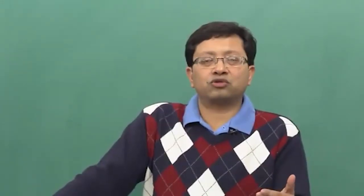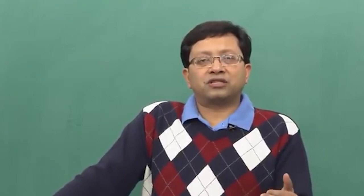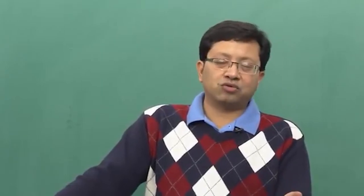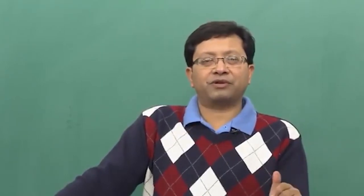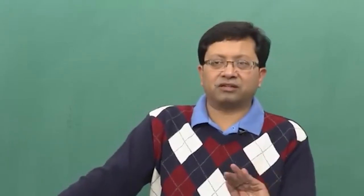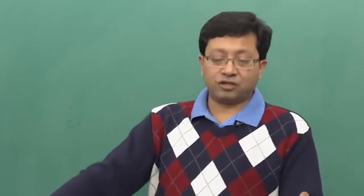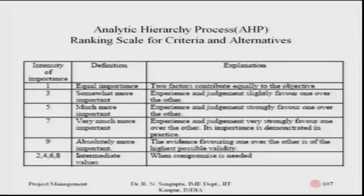According to Saaty, the intensity of importance when comparing two different criteria is done on a one-to-one basis. For example, if there are three decisions you compare decision one with decision two, decision two with decision three, and decision one with decision three. You make binary comparisons between criteria at each level of the hierarchy — primary, secondary, tertiary. When two criteria are of equal importance, you give a score of one, meaning both factors contribute equally to the objective — in this case, buying the car — hence a weightage of one.